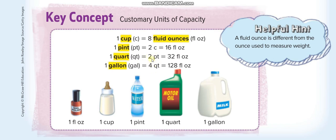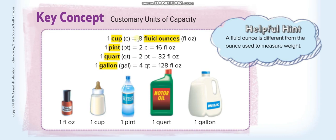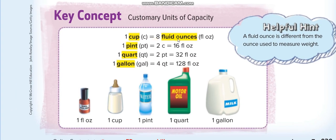One gallon equals 4 quarts. Four quarts equals 8 pints. Eight pints equals 16 cups, and 16 cups times 8 is 128 fluid ounces. For conversions: pints to cups multiply by 2; cups to pints divide by 2; quarts to pints multiply by 2; pints to quarts divide by 2; gallons to quarts multiply by 4; quarts to gallons divide by 4. For quarts to cups, first convert to pints, then pints to cups.